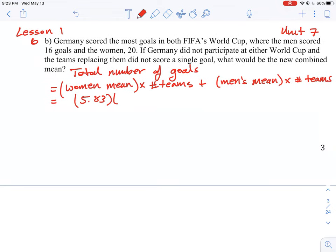And then there were a total of 24 teams being played. And then the men's mean was 5.18 goals and there were a total of 40 teams. So when we work out that total, we find there's 347 goals that were scored in the tournament.